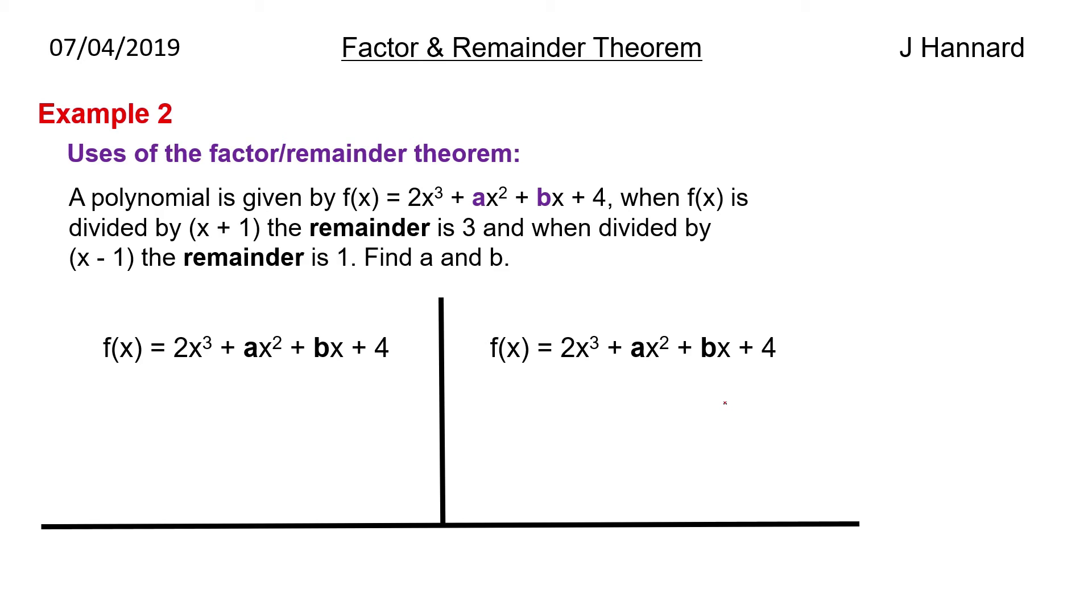Put a minus 1 through first because remember we want to make this bracket 0 first. So we let x equal minus 1 and we know that the remainder is 3. So if we put a minus 1 through this, we get a remainder of 3. So put a minus 1 everywhere you see an x. So you get minus 2 plus a minus b plus 4 equals 3. So therefore a minus b equals 1. Okay, that's as far as I can get.